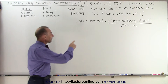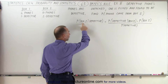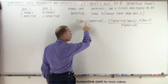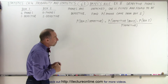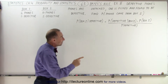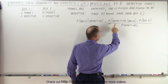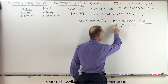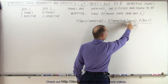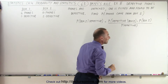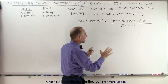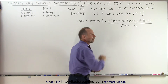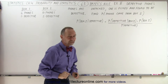So the probability that the phone came from box two, given that the phone was defective, is equal to the probability that the phone is defective given that it came from box two, times the probability it came from box two — all of that divided by the probability that the phone is defective.